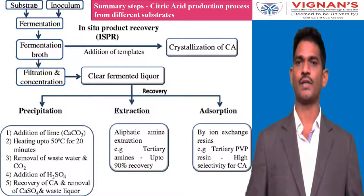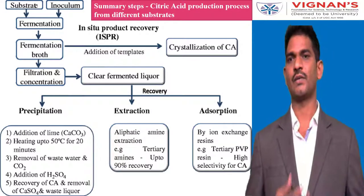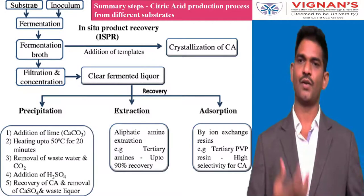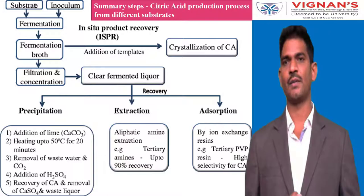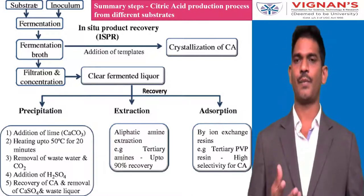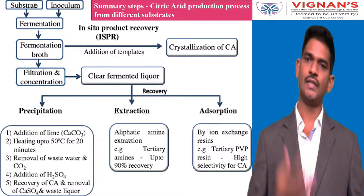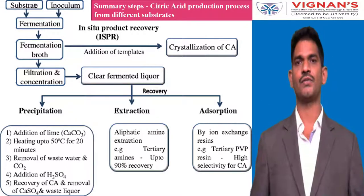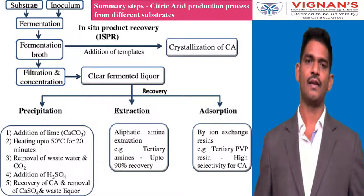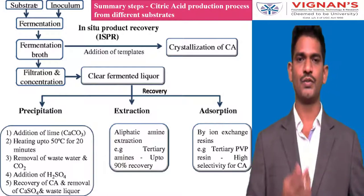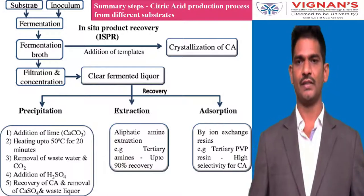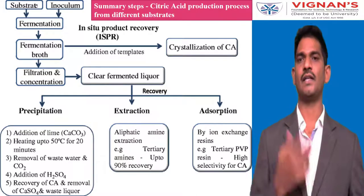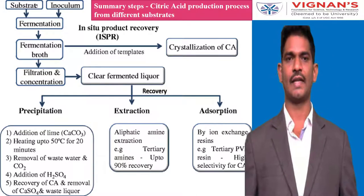Summary: the production process requires different raw materials, and the inoculum is an important parameter. The fermentation process runs for 6 to 8 days, after which citric acid is recovered by filtration. Recovery methods include precipitation, solvent extraction, and adsorption using selective resins like PVP resin. A third method is in-situ product recovery, involving addition of templates for crystallization of citric acid.